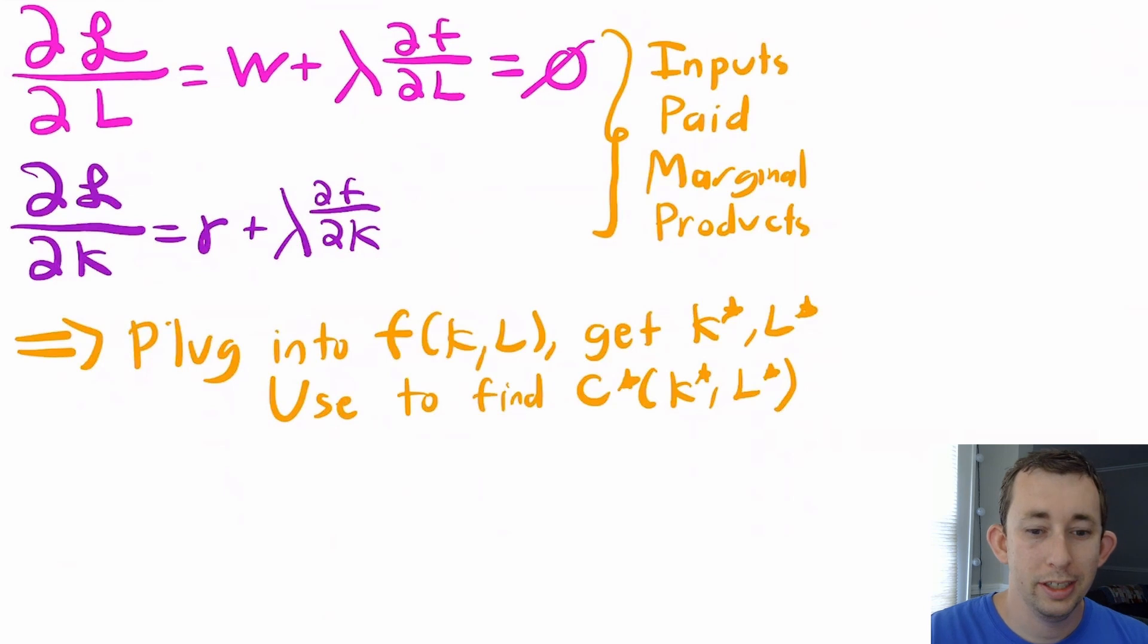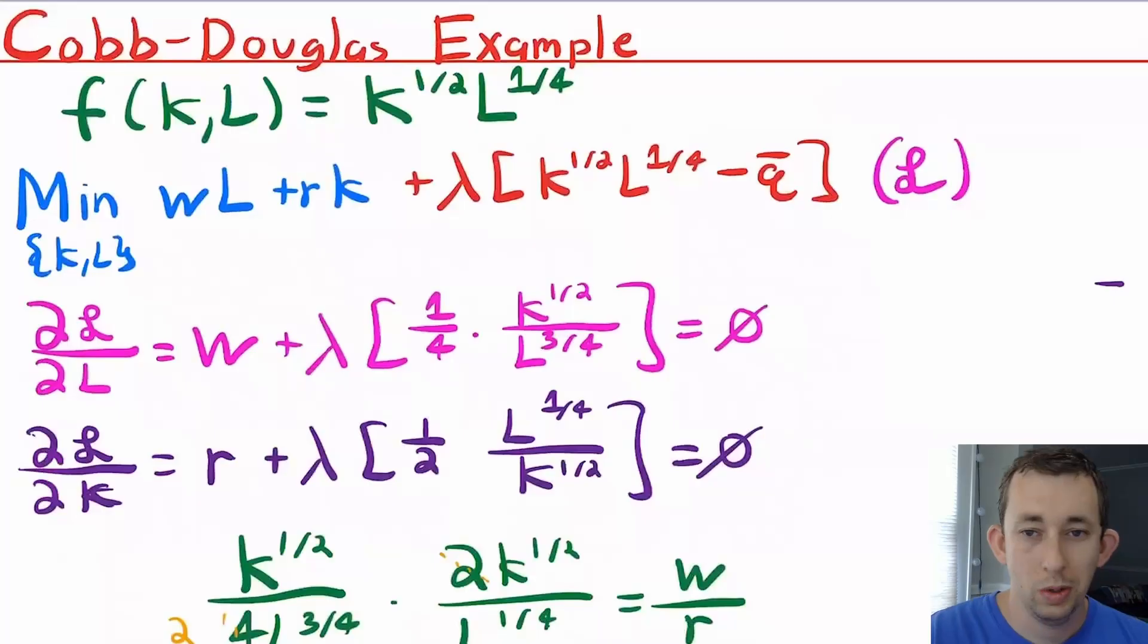Then what I'm going to do is plug this into my production function. That is going to tell me my conditional factor demand, conditional factor demand just being a fancy word for my K star and my L star. Then I can use K star and L star to get my value function for this problem, which is just my cost function. That was sort of hand wavy. Let's go into an example.